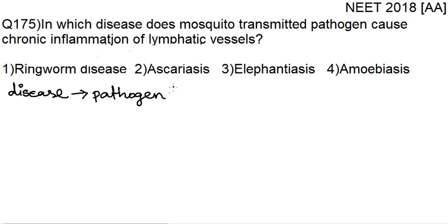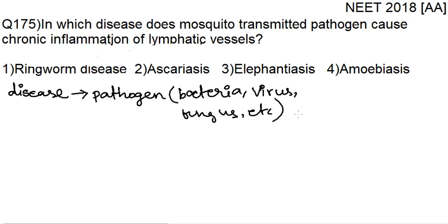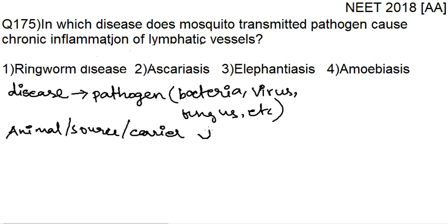These pathogens can be anything — a bacteria, a virus, a fungus, a protozoan, etc. The animal or source or carrier which carries these microorganisms and causes disease in human beings is known as a vector.